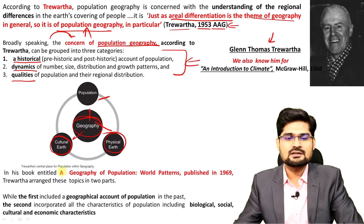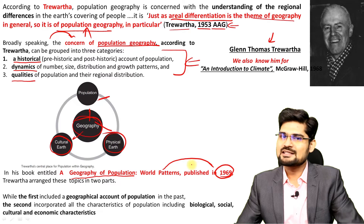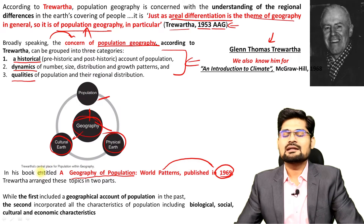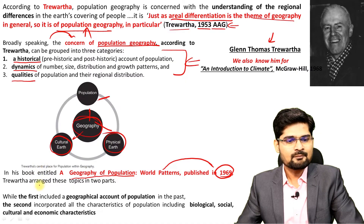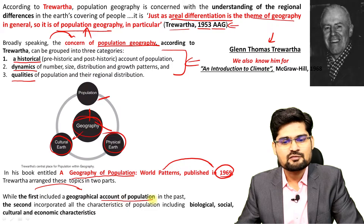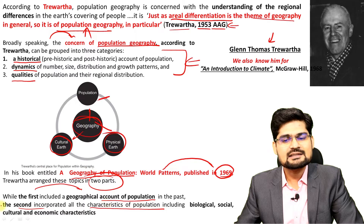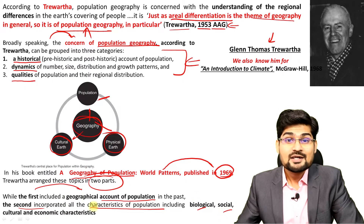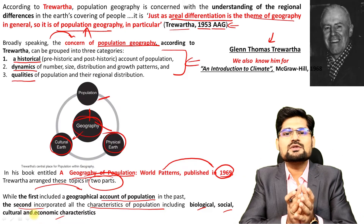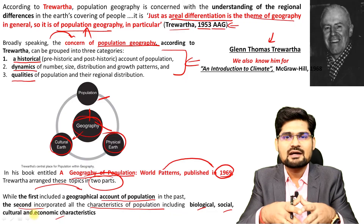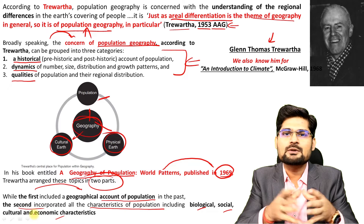The book called 'Geography of Population: World Patterns,' published in 1969 by Trewartha himself, is one of the important pivot points if you want to study population geography. The first part included a geographical account of population, while the second part incorporated the characteristics of population — for example, biological characteristics, social characteristics, cultural and economic characteristics. This kind of approach was given by Trewartha, and further more scholars added. In India also, there was a definite path in terms of population geography studies.